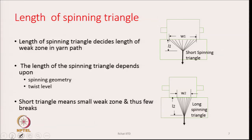The spinning triangle has two dimensions: a length dimension and a width dimension. The length of the spinning triangle decides the length of the weak zone. Obviously, the longer the length, the longer the weak zone, and therefore the greater the possibility of breakage.